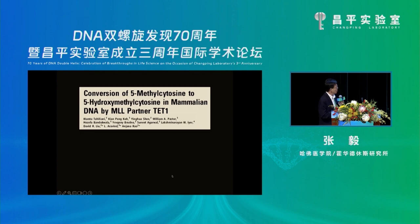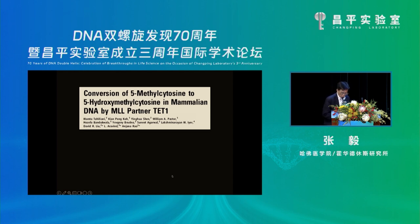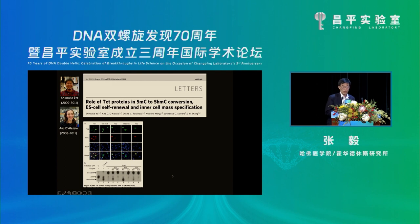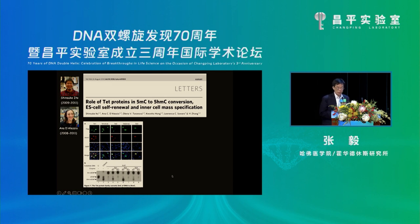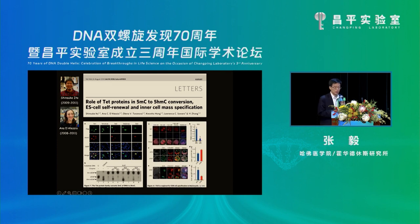At that point, Angela Roe published her landmark paper showing that TET1 can convert 5-methylcytosine to 5-hydroxymethylcytosine. Using antibody against 5-hydroxymethylcytosine, we showed that the transfected cells overexpressing TET proteins generate 5-hydroxymethylcytosine. We also went on to show TET1 plays an important role in embryonic development.